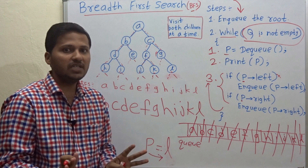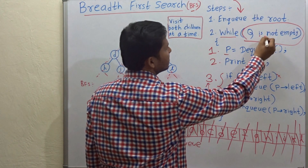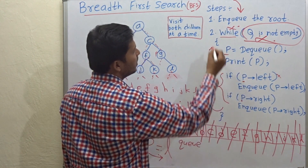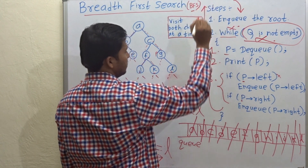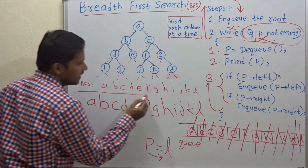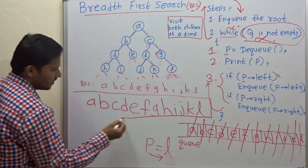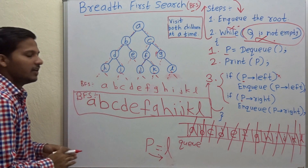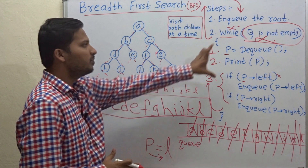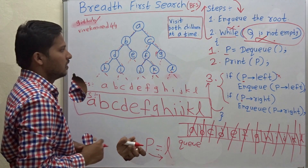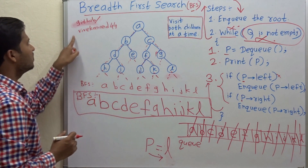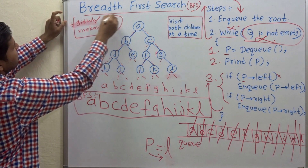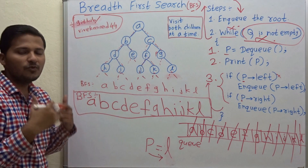Now check: is the queue empty? Every element has been dequeued, so the queue is empty. Since the queue is empty, the while loop condition is not satisfied and we exit the function. We have completed printing the BFS for this binary tree. You can get the working code at github.com/vivekanan44.